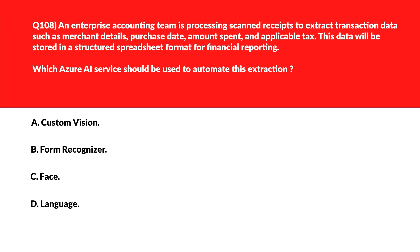Option D says Image Analysis — Image Analysis deals with general visual understanding but doesn't ensure identity recognition, so incorrect. We'll lock option C, Facial Detection and Facial Recognition, as the right answer.